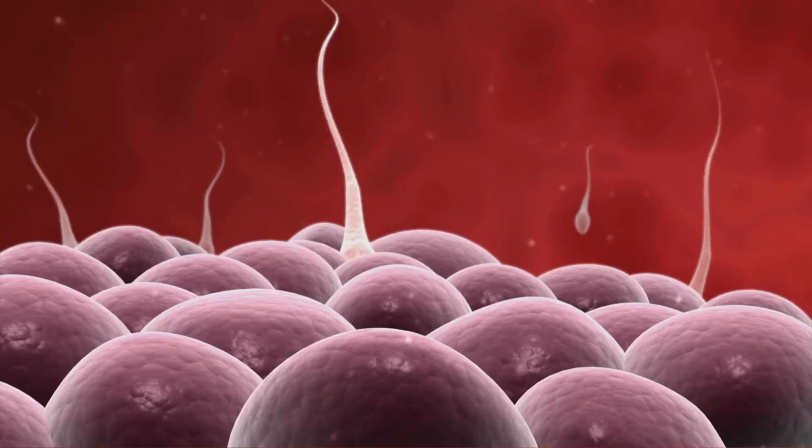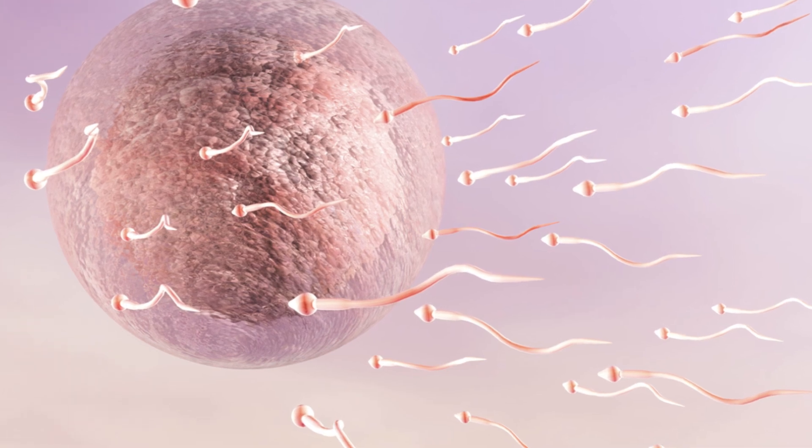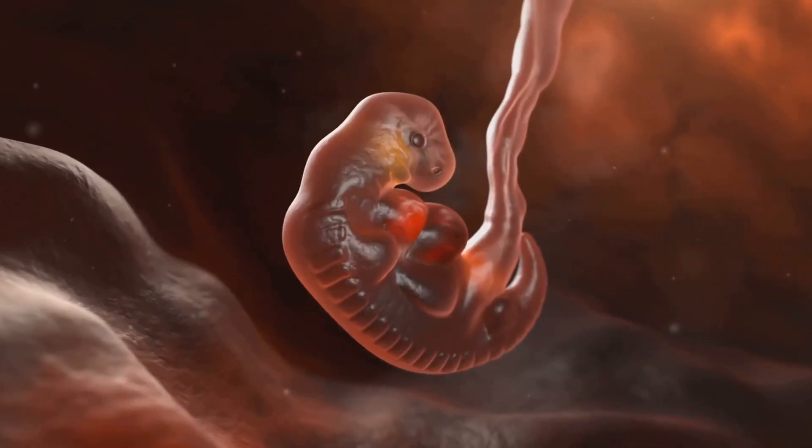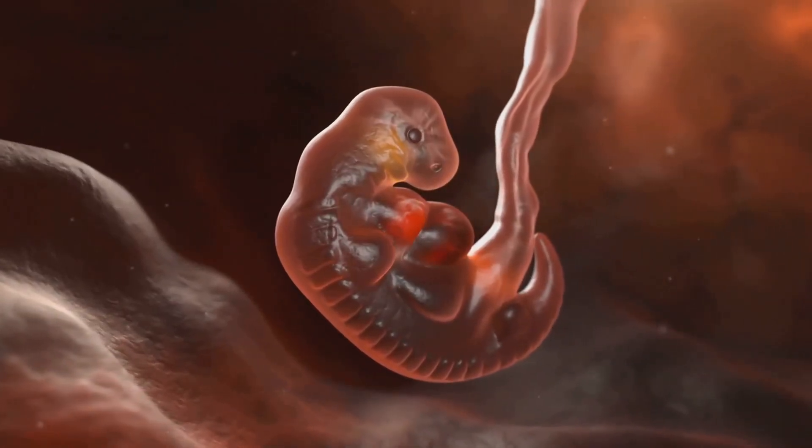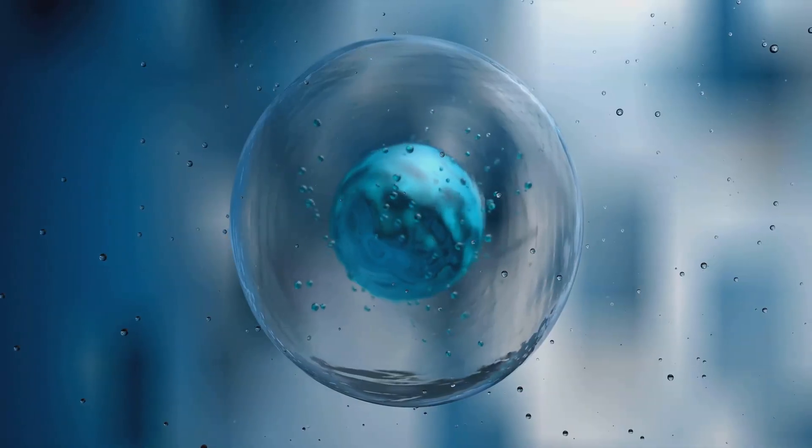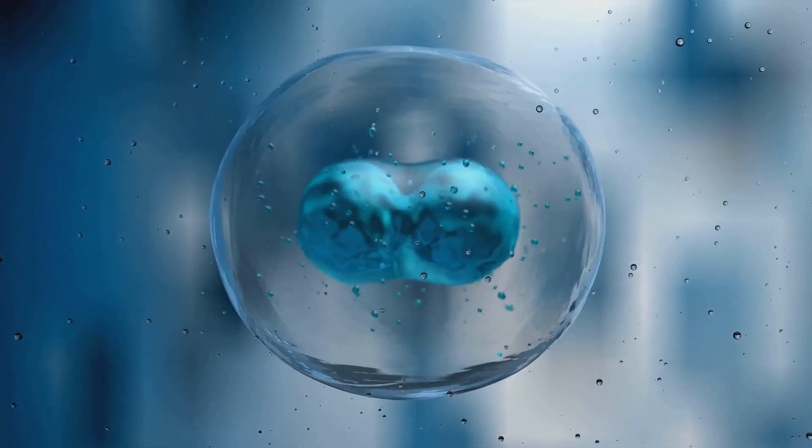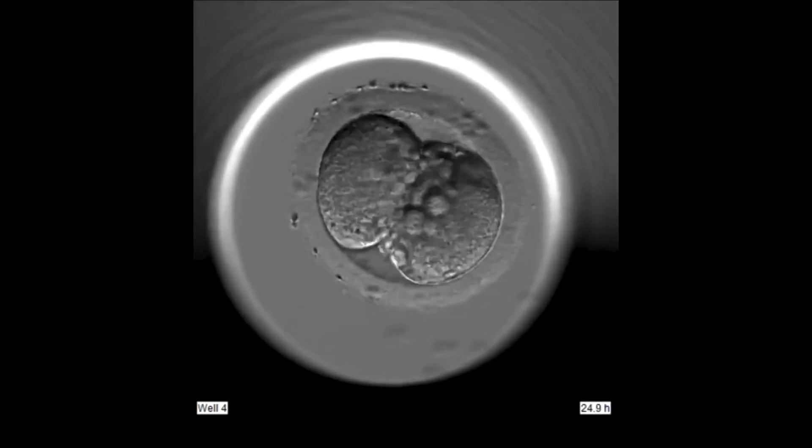It's a race against time as the oocyte survives for just 12 to 24 hours post-ovulation. If not fertilized, it disintegrates, marking the end of a monthly cycle. Interestingly, oocytes are frozen in time, halting their cell division until fertilization.